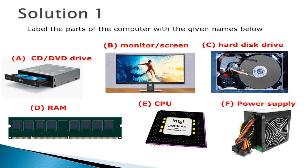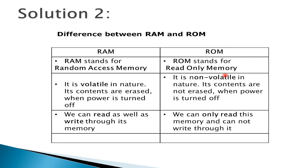Now this is the solution for activity one — label the parts of the computer with the given names. And also the solution for activity two: the differences between RAM and ROM.